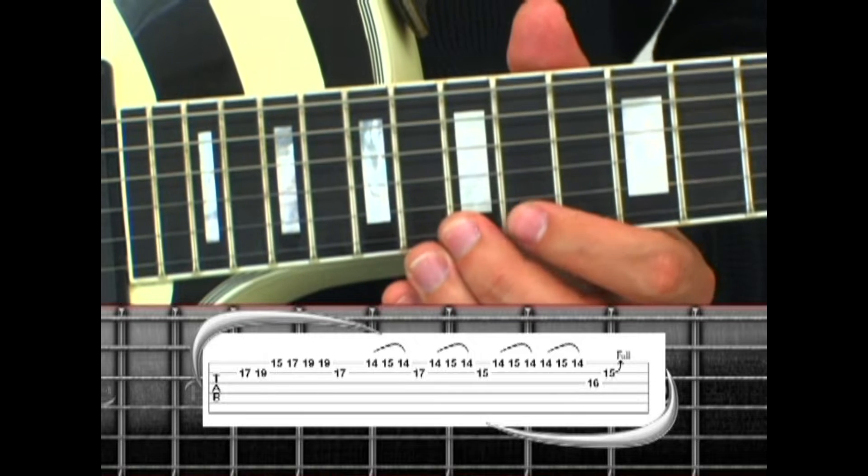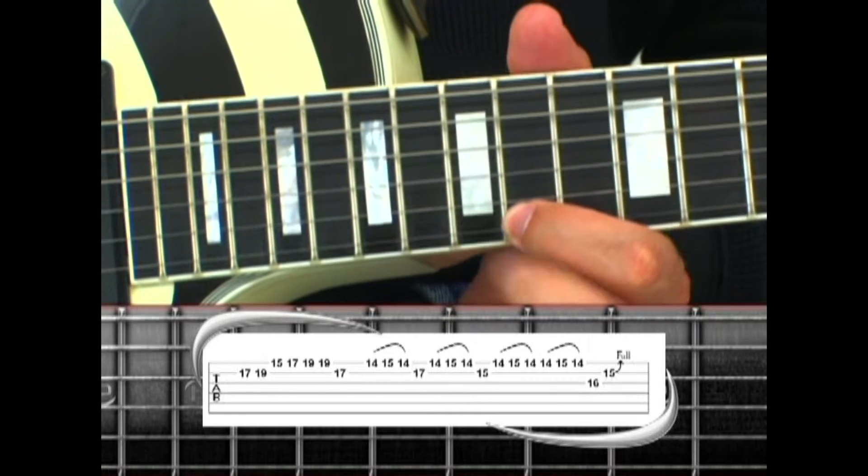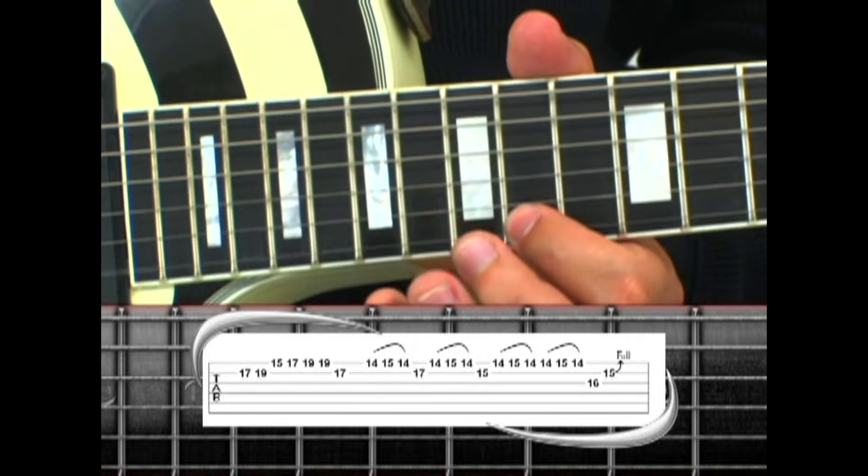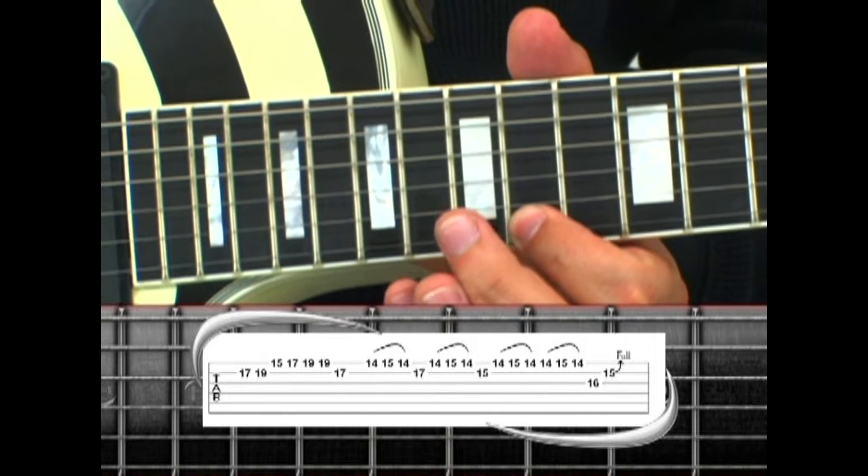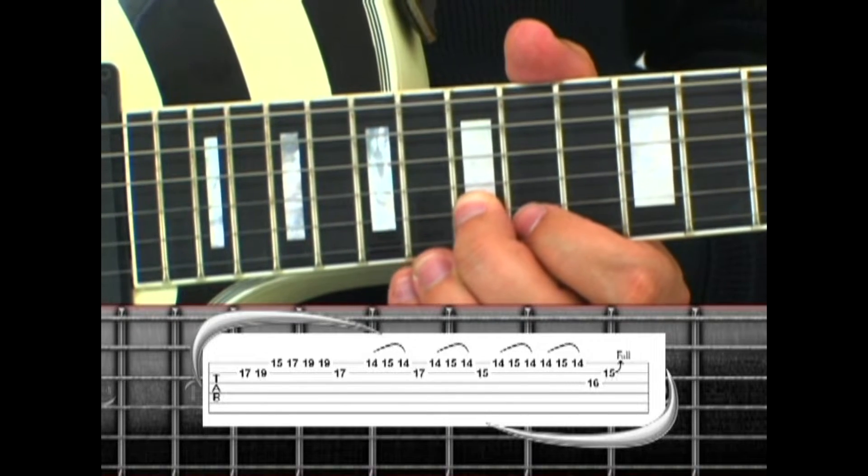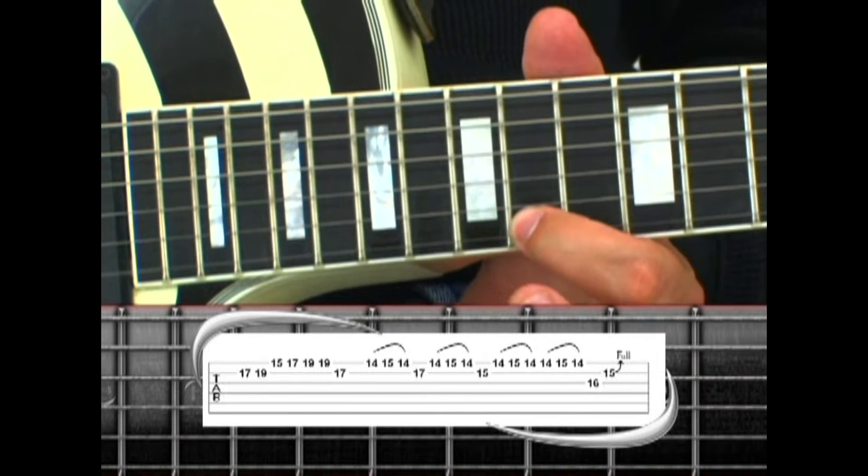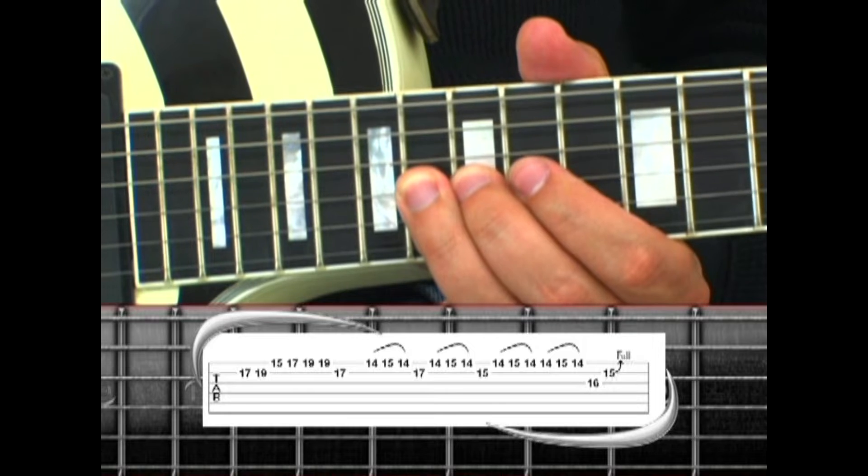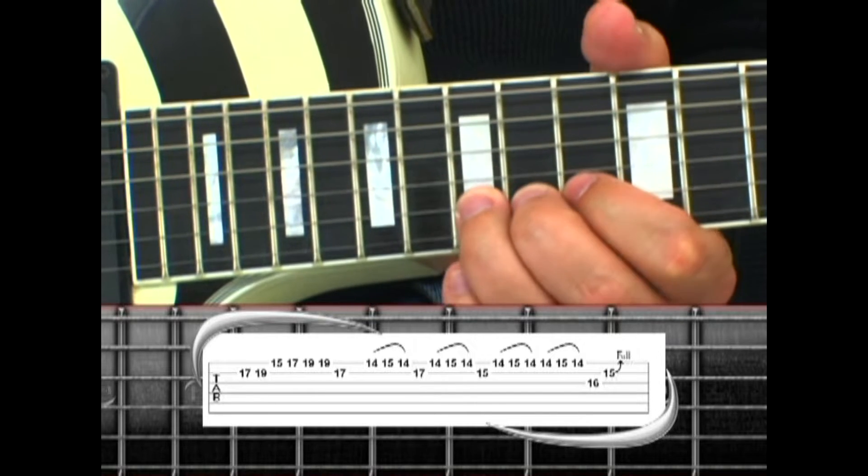Hammer pull the 1st string 14, 15, 14 to 2nd string 17, again, but end on the 2nd string 15, 2 hammer pulls, to the 3rd string 16, then 2nd string 15 with a bend.